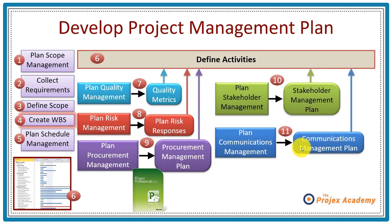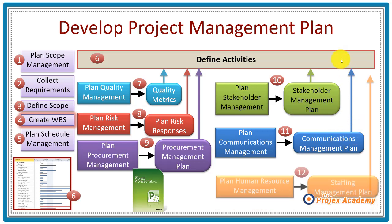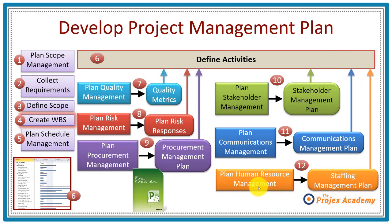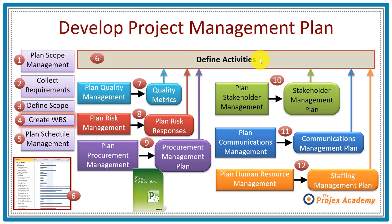Step eleven is the same thing with communications. Communications is a two-way street — who you're going to communicate with, who's going to do the communicating, and so on, adding activities here. Step twelve, plan human resource management, contains the all-important staffing management plan. These are your resources, and as a result of knowing who your resources are, they will also need to carry out activities.